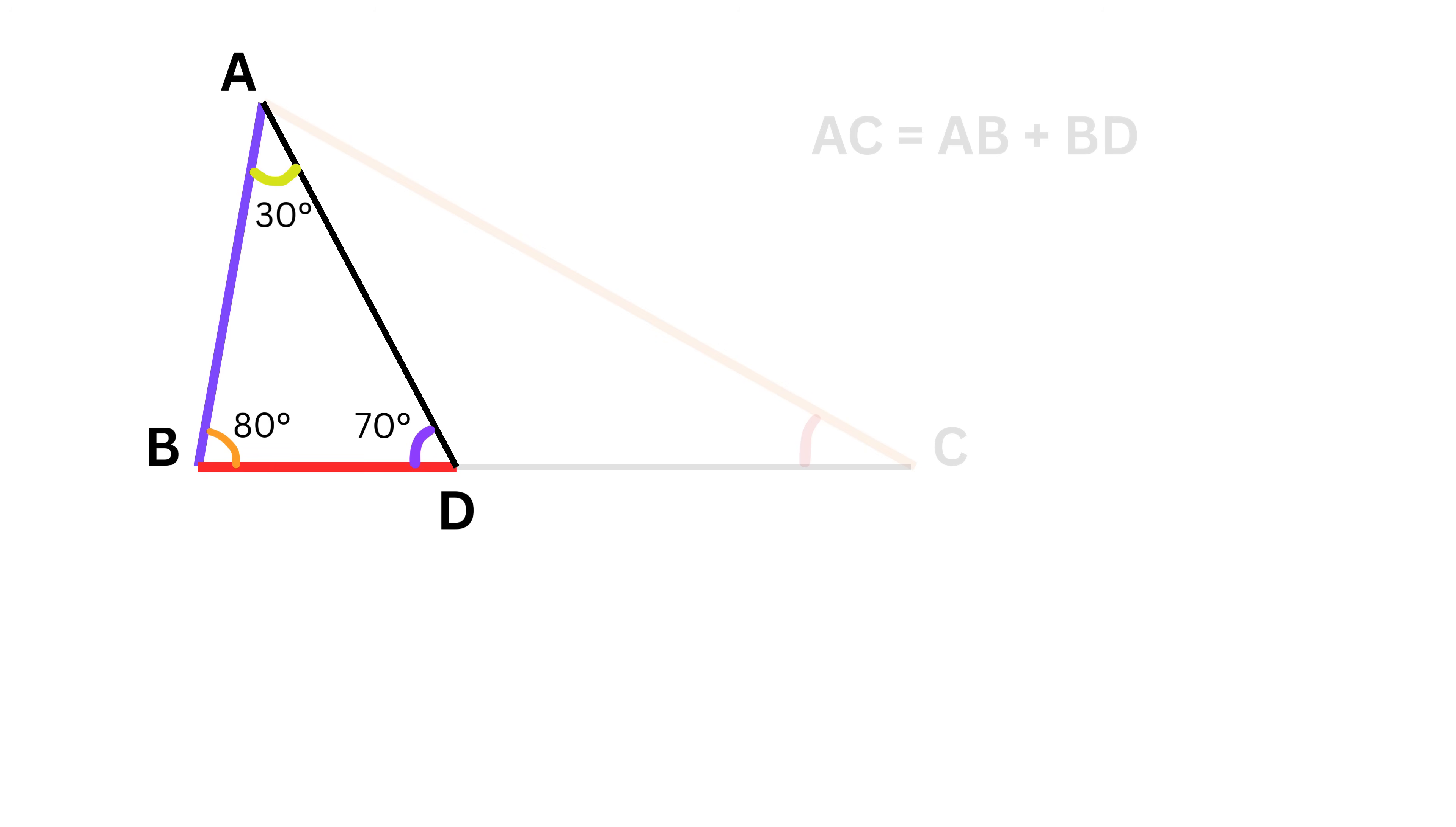Then we also know that the angle of a straight line is always 180 degrees. The sum of both these angles form a straight angle and thus their sum must be 180 degrees. This is 70, and thus this angle must be 110 degrees.